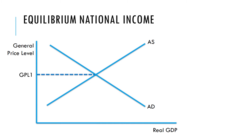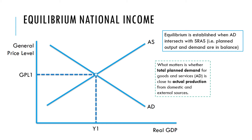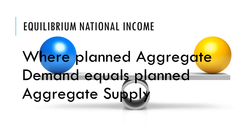Now imagine a scenario where the economy is at a general price level where the amount planned to be spent is exactly the same as the amount planned to be produced. There is no pressure for the economy to move, so we say the economy is in an equilibrium position. Equilibrium is established when aggregate demand intersects with aggregate supply — planned output and demand are in balance. That level of output is the equilibrium national income, where planned aggregate demand equals planned aggregate supply.